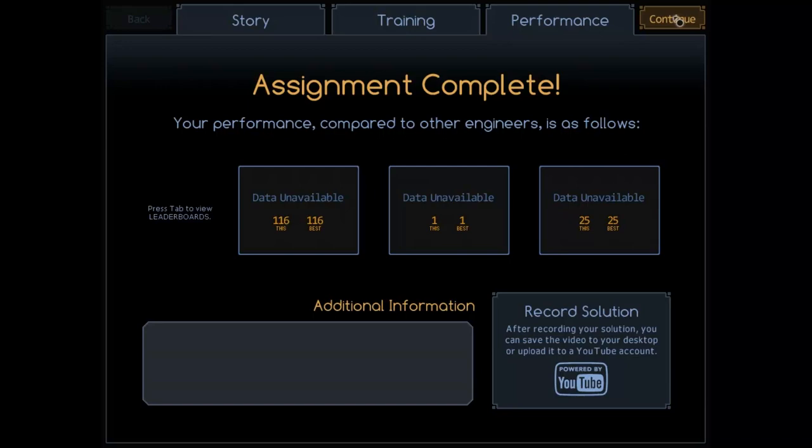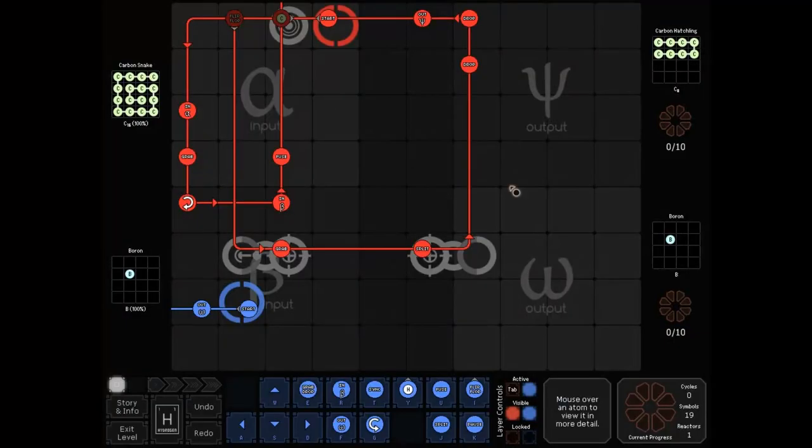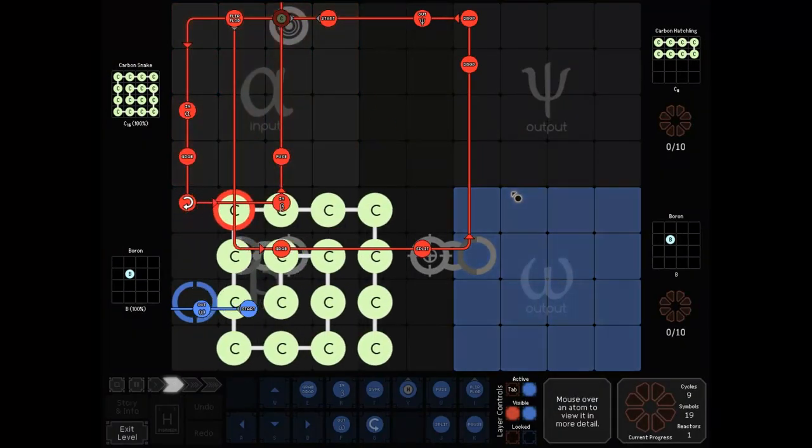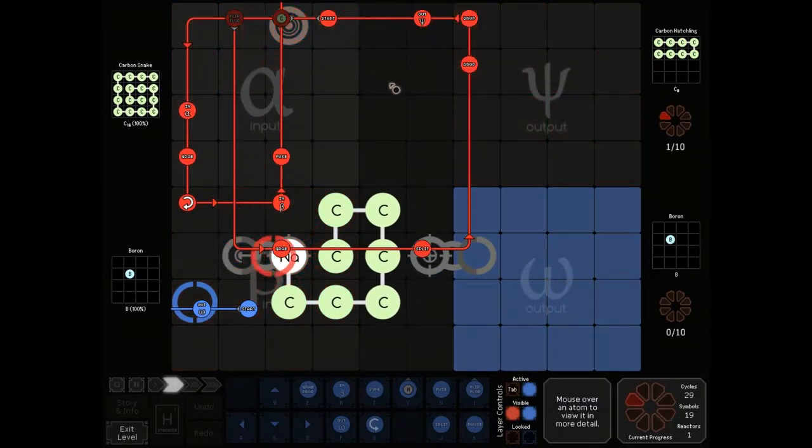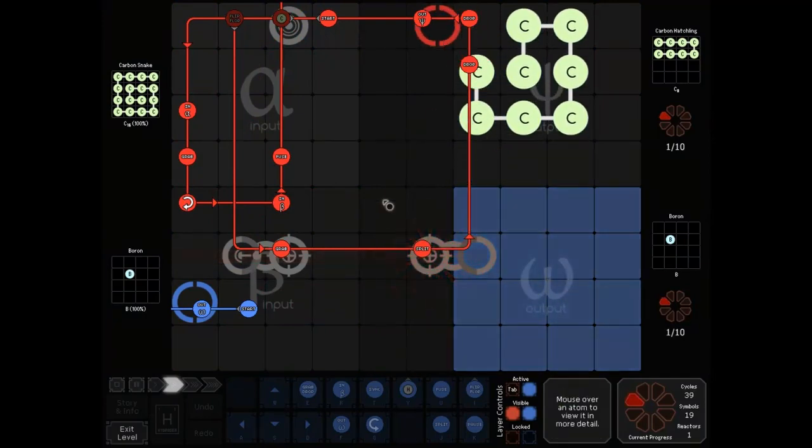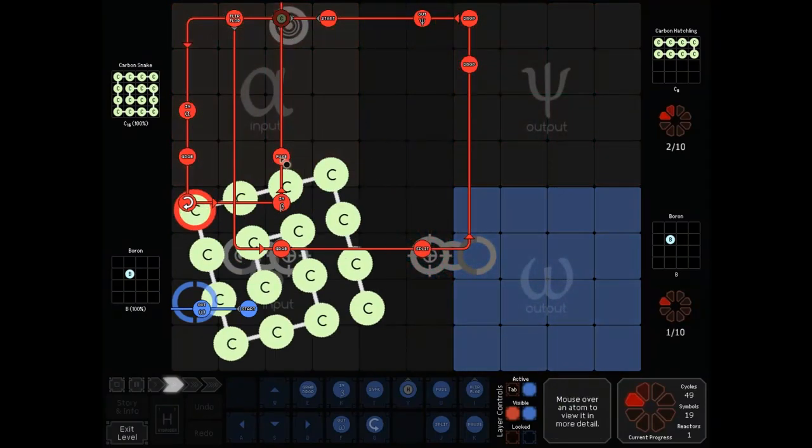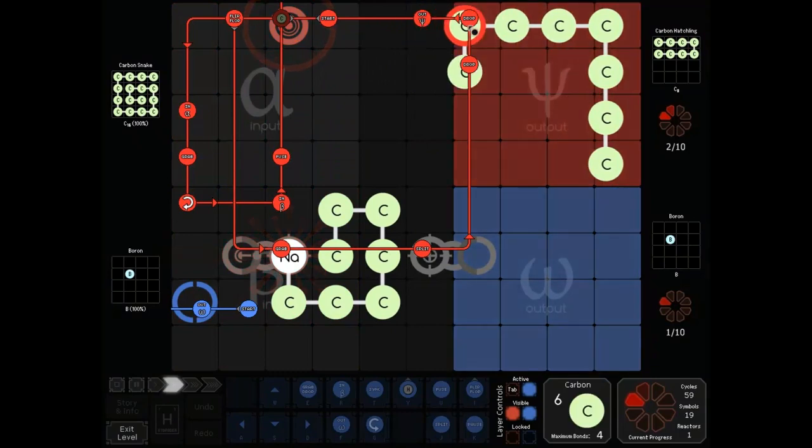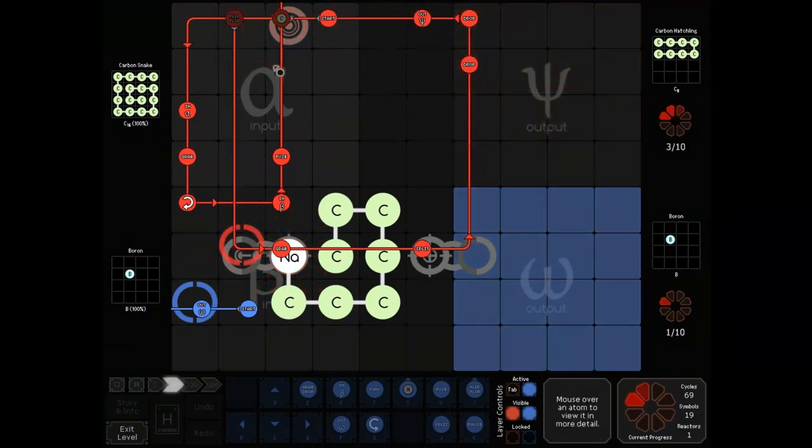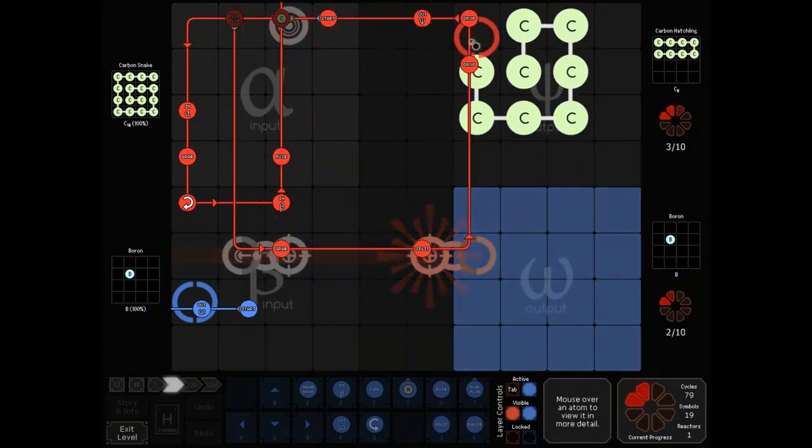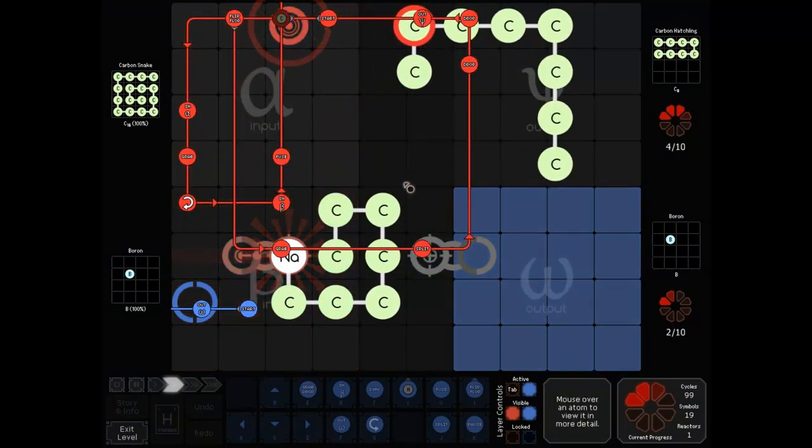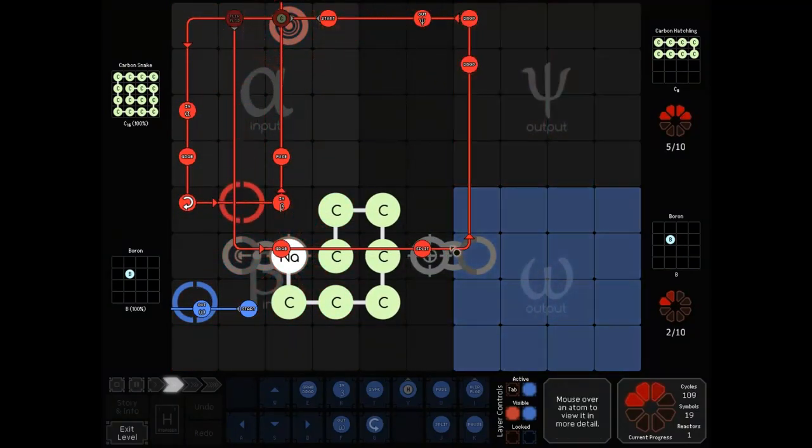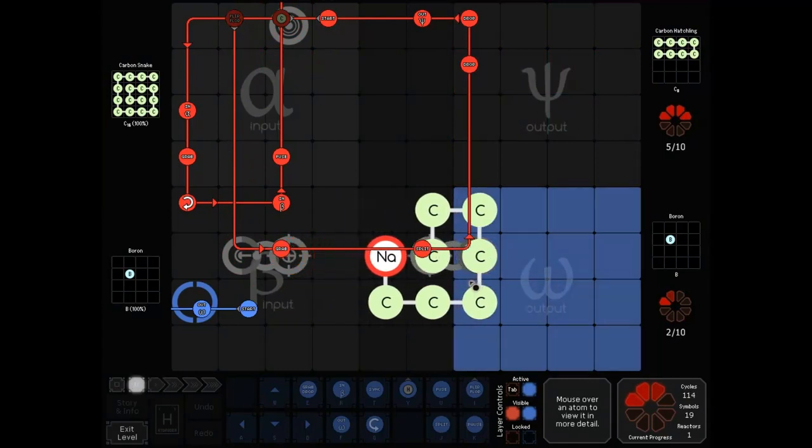So let's see some of the good ones. Amro does a thing for only 19 symbols, where one Waldo does pretty much all of the work. There's an interesting way of using this carbon sensor here to reuse some of his path, to drop that half of the carbon snake, and then come back and drop it out there.